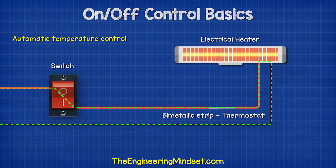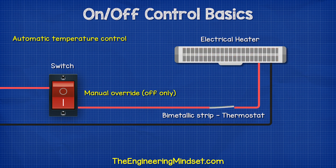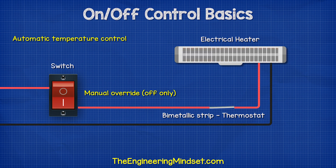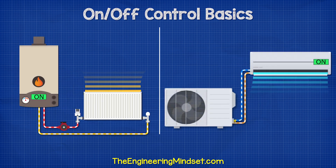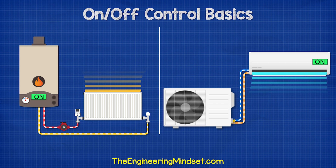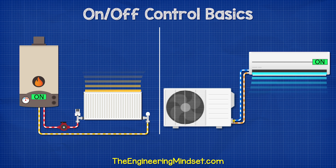We usually connect a manual switch with a thermostat so that a user can override the heating if they are too hot. We could also control a heating or cooling system with a simple on-off control.